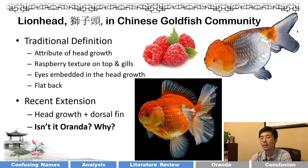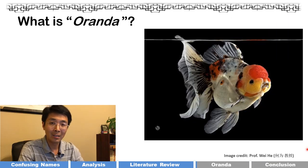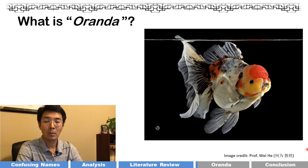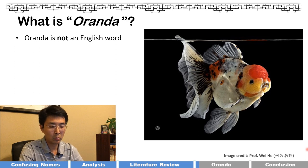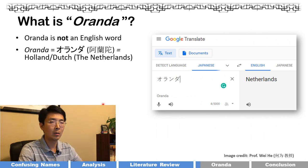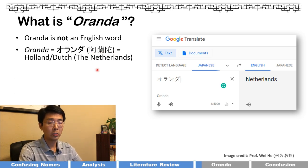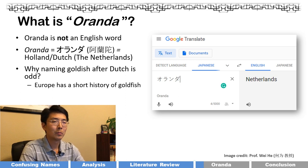Now let's talk about the historical relation between lionhead and oranda — which is very interesting. Before discussing oranda, let's start from etymology. 'Oranda' is not an English word — you won't find it in the Merriam-Webster dictionary. Even though it's popular in the goldfish community, 'oranda' is actually a Japanese word. In Japanese, 'oranda' (阿蘭陀, pronounced 'arando') means Holland or Dutch. So the pronunciation 'arando' became 'oranda.'